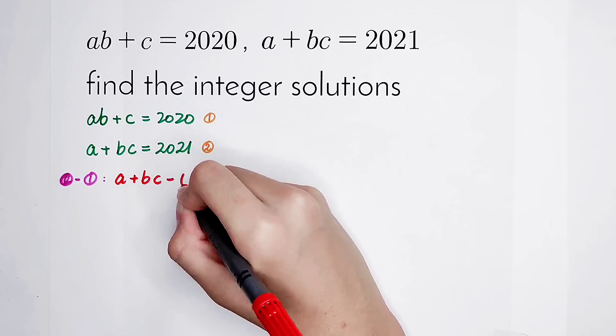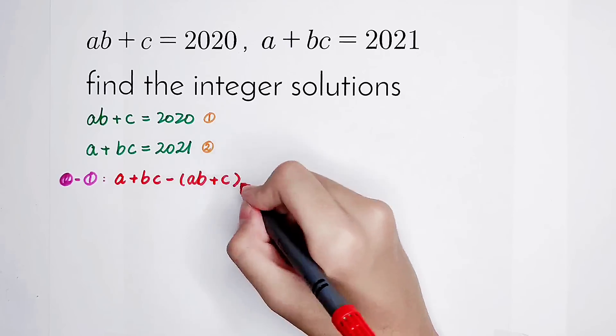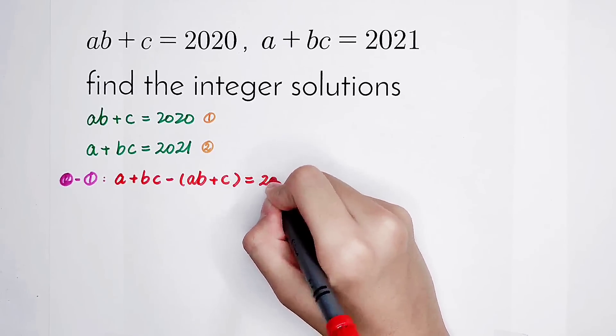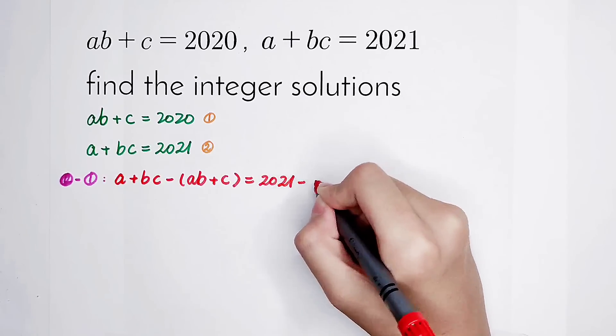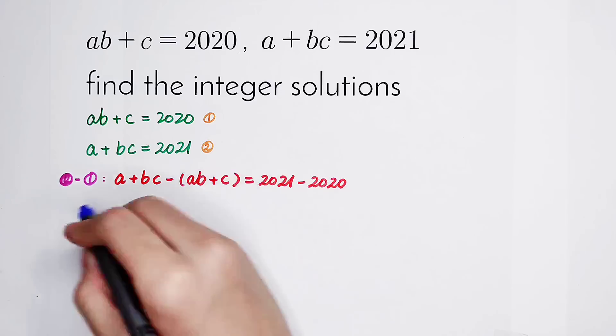And then minus AB plus C, with bracket, is equal to 2021 minus 2020.